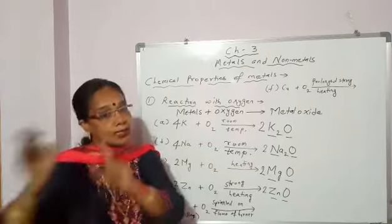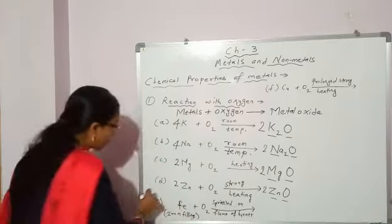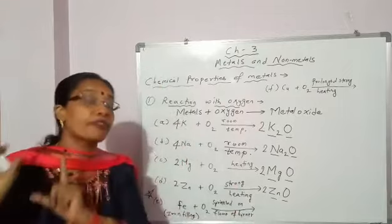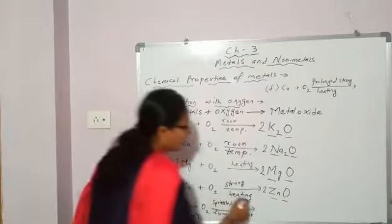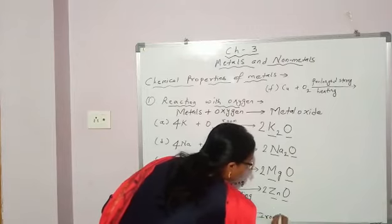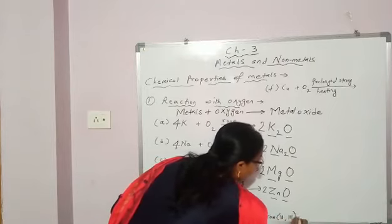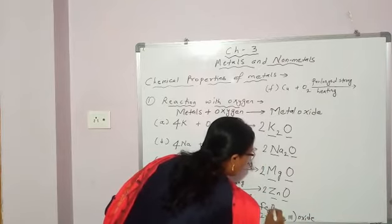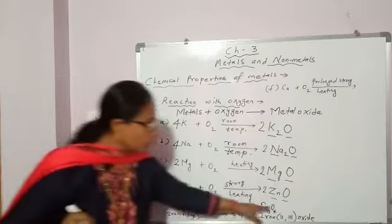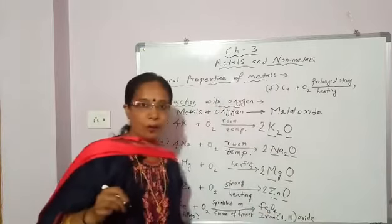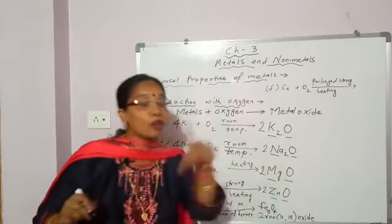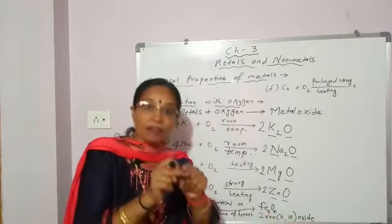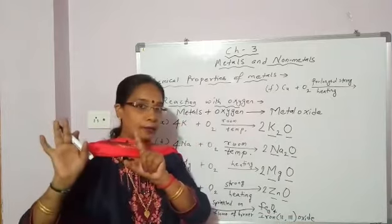When iron filings are sprinkled on the flame of the burner, iron reacts with oxygen and what is formed? Iron oxide. But students, keep in mind — the form of oxide formed is slightly different. It is iron(II,III) oxide, and the formula is Fe₃O₄. It is not ferrous oxide or ferric oxide alone — this iron(II,III) oxide is a mixture of ferrous oxide and ferric oxide.